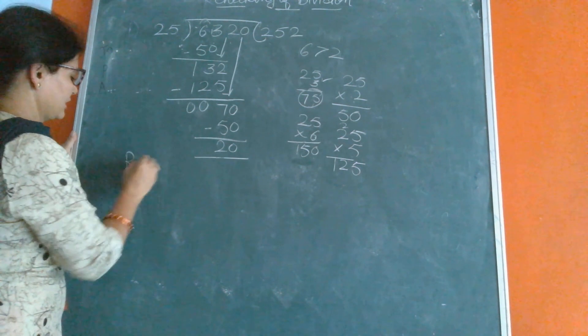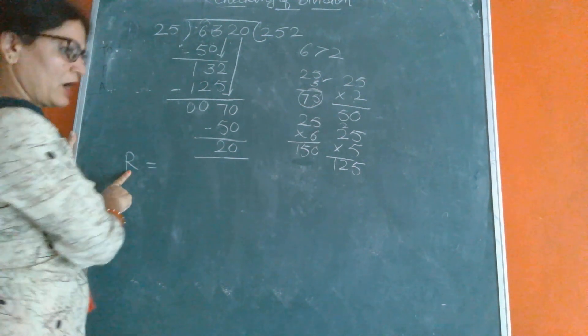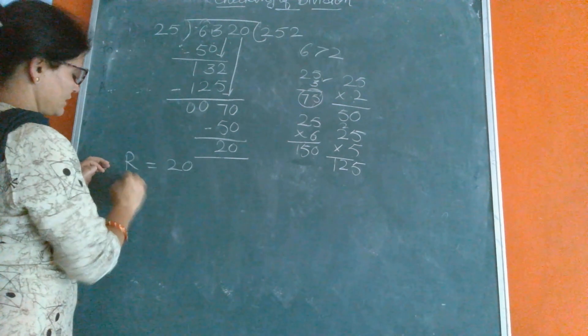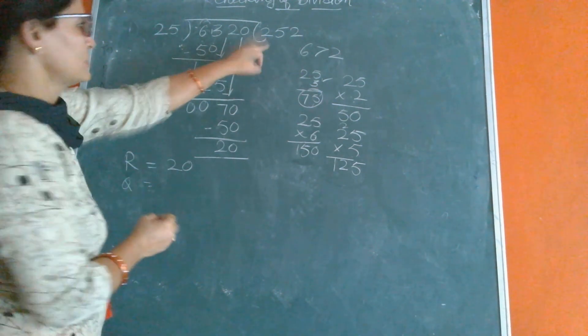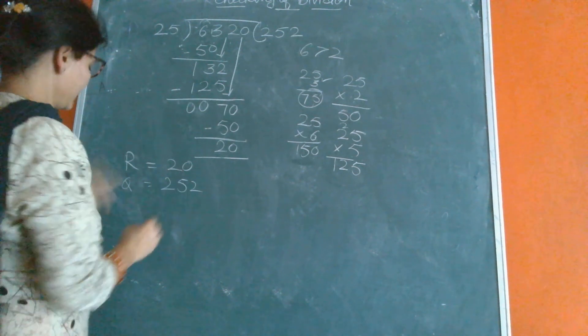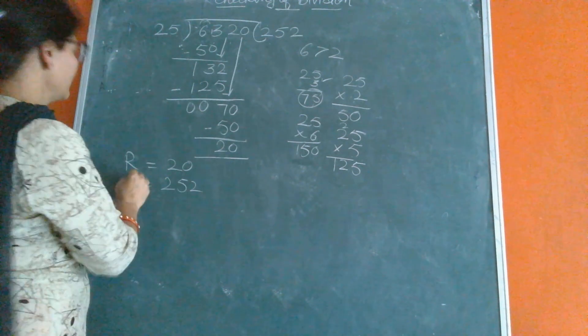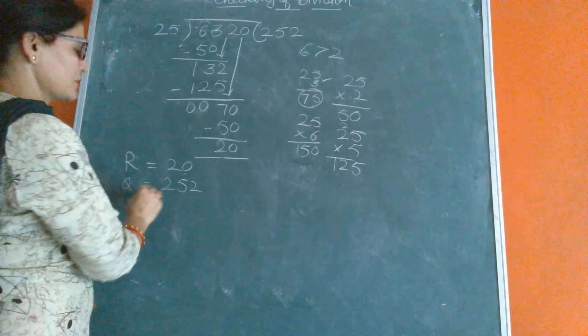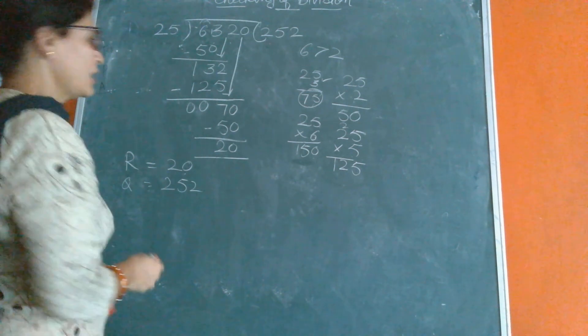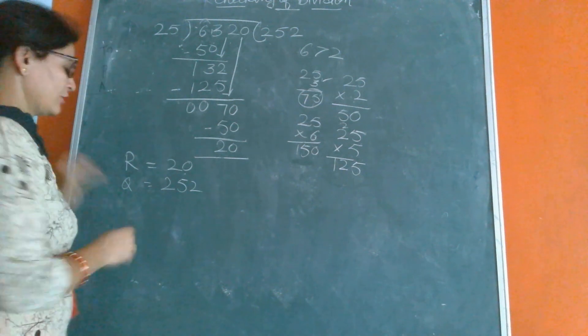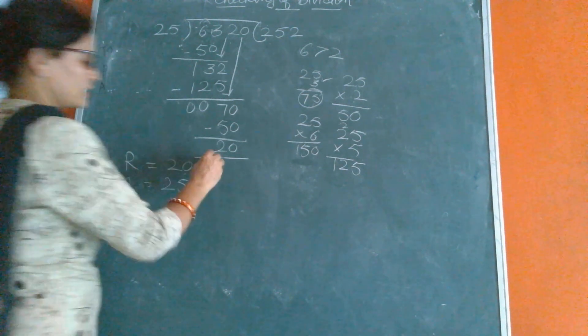For remainder, we can write R in short form, R 20. Quotient - quotient is the answer of division - is 252. We can write Q in short form. The quotient is 252 and the remainder is 20. And how to check?